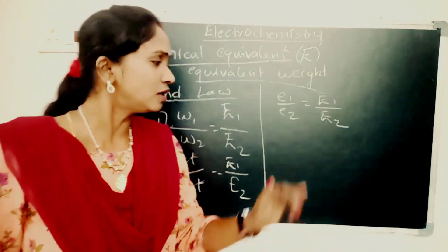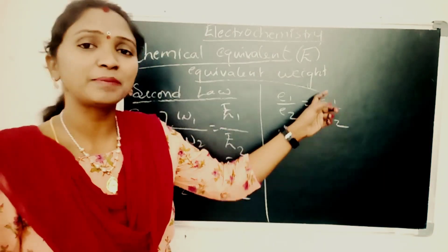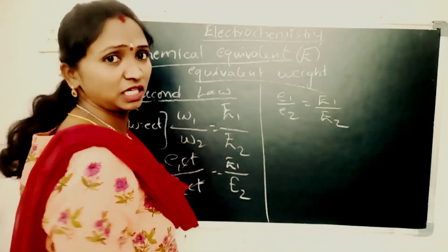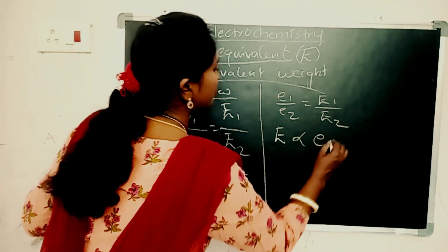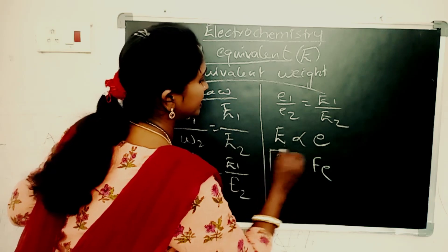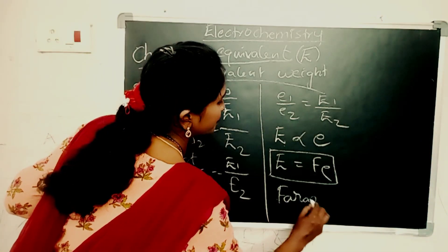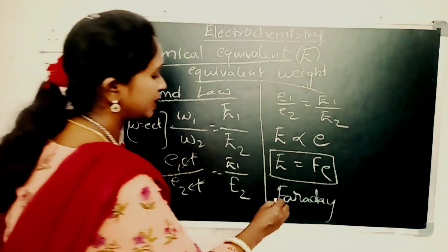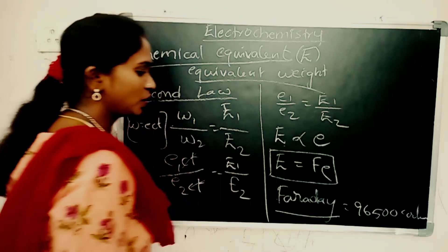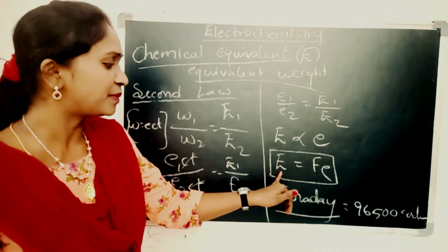So we can say that electrochemical equivalent is directly proportional to chemical equivalent: e1/e2 equals capital E1/E2, meaning both are directly proportional. From this, capital E equals F times small e, where F is a proportionality constant called Faraday. The value of one Faraday equals 96500 Coulombs.